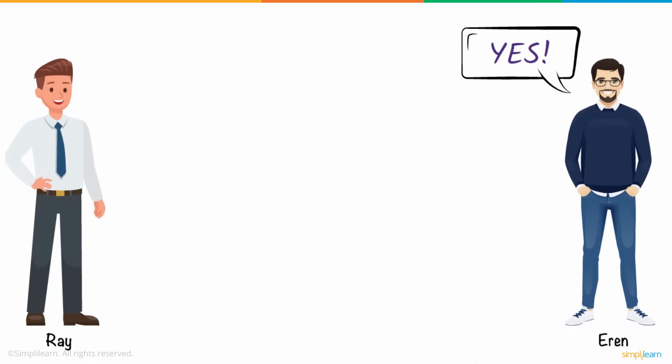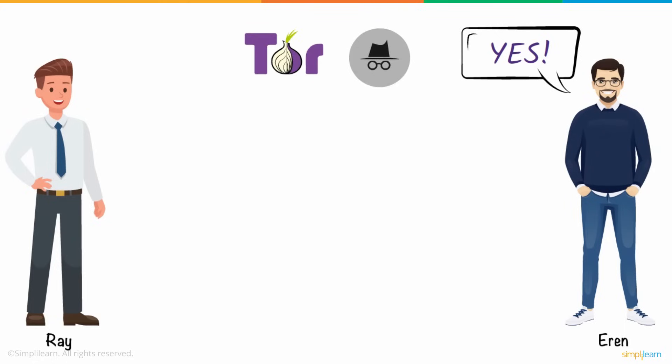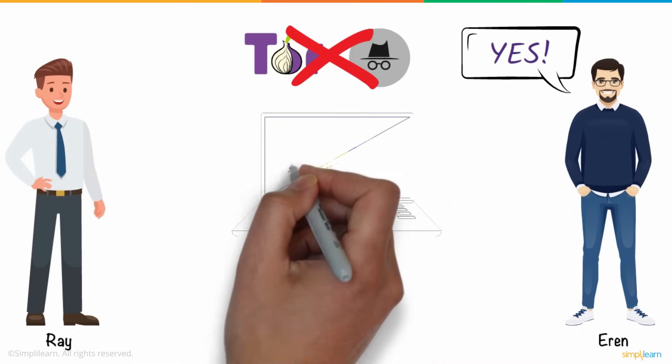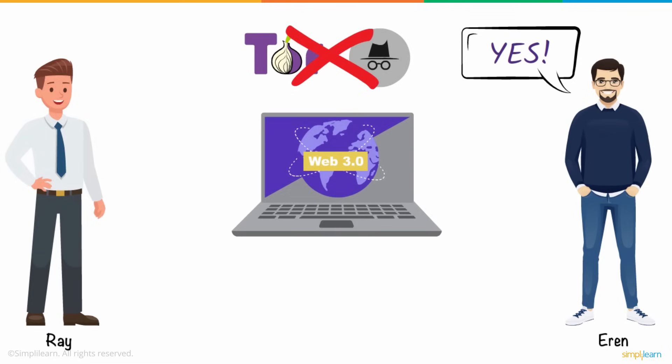Aaron answered yes, there are a lot of ways to do that, using Tor Browser, Incognito Mode, etc. But these are not permanent solutions, and there can be fluctuations in their reliability. But this scenario can be changed not just for you, but for everyone using the internet, with the help of Web 3.0.